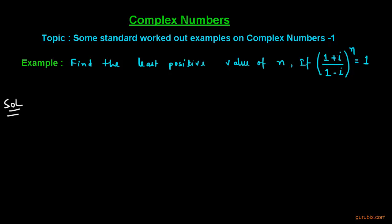In bracket, we are given 1 plus iota over 1 minus iota and now we shall rationalize it and for that we shall multiply both numerator and denominator by 1 plus iota.